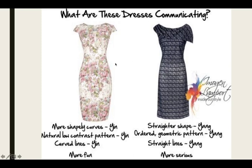So, what are these two dresses communicating? We've got more of a fun here and more of a serious dress here. Yin has more of a shapely curve. We've got that natural feminine curve coming in, a little bit of a low contrast pattern, and some curved lines here with that cap sleeve. This is a straighter shaped dress. It's ordered. It's got a geometric pattern, straight lines.